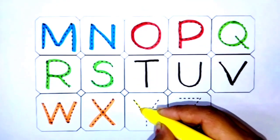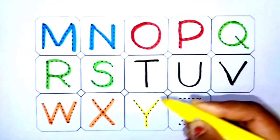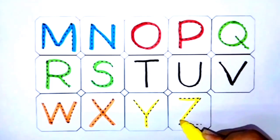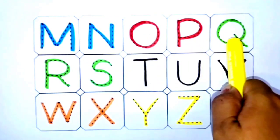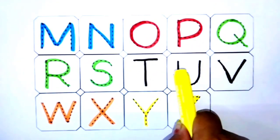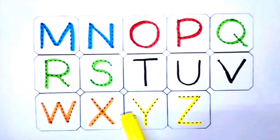Yellow color: Y for yak, Z for zebra. Review: M, N, O, P, Q, R, S, T, U, V, W, X, Y, Z.